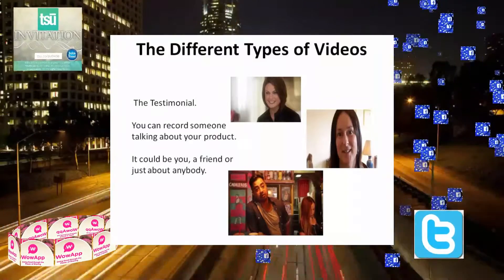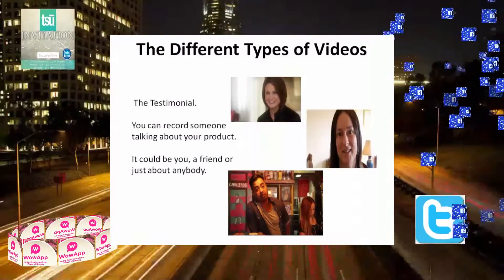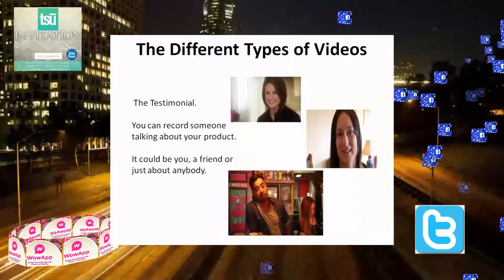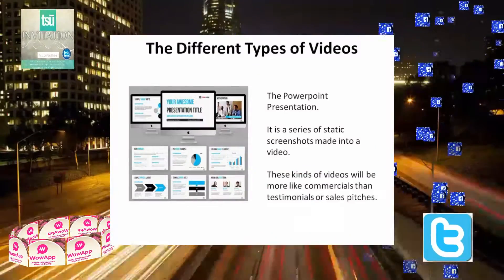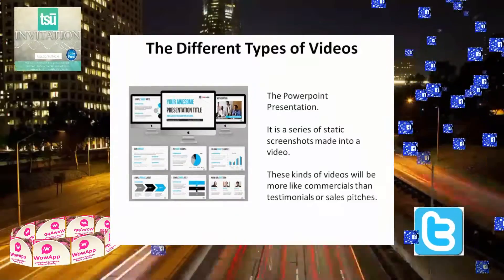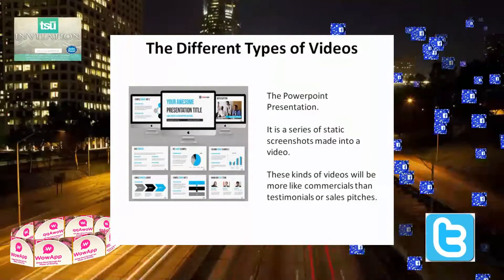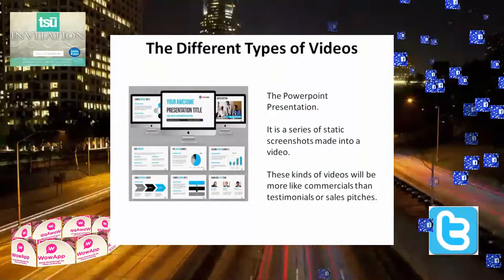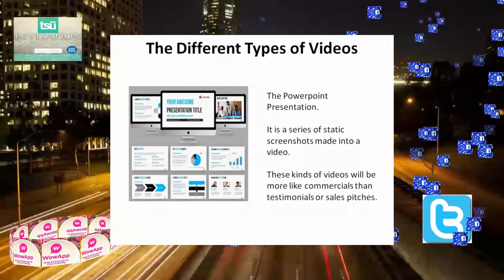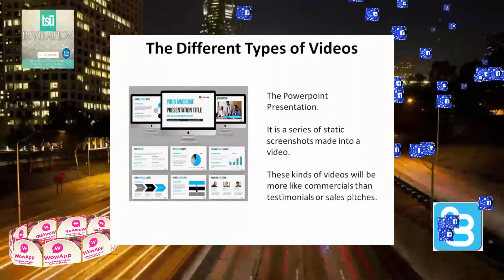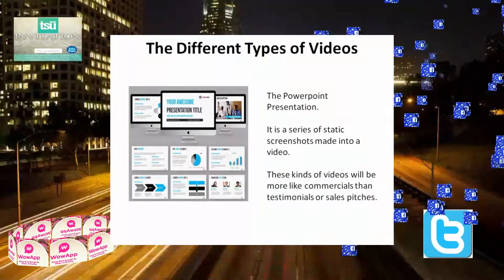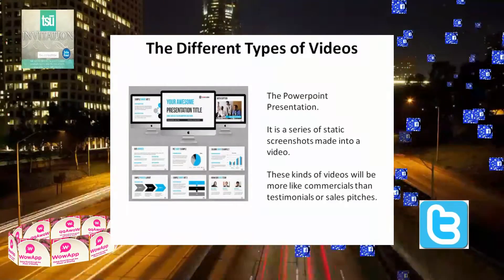One common type of video is just to record someone talking about your product — it could be you, a friend, or just about anybody. The second kind of video is a series of static screenshots, such as a PowerPoint presentation. They can be created with PowerPoint if you already have the program, or you can download a program to build one. These kinds of videos are going to be more like commercials than testimonials or sales pitches.